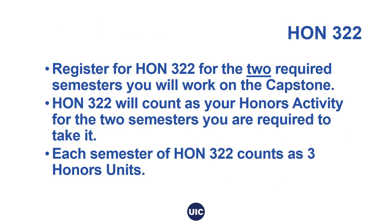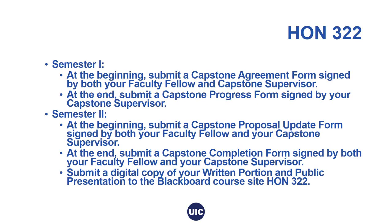In addition to Honors 301, Honors 322 is the zero-credit placeholder that designates you as a Capstone student. You will register for Honors 322 for the two required semesters you work on the Capstone; it counts as your honors activity and each semester earns you three honors units. You may register for Honors 322 only two times. In the first semester, you will submit a Capstone agreement form signed by both your faculty fellow and Capstone supervisor, and at the end of that semester a Capstone progress form signed by your Capstone supervisor only. In the second semester, you will submit a Capstone proposal update form signed by both your faculty fellow and Capstone supervisor, and at the end of the second semester a Capstone completion form signed by both.